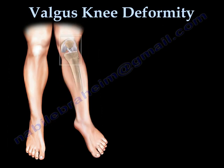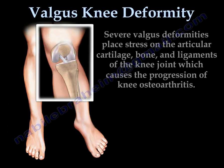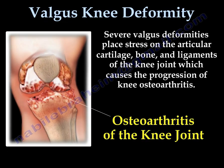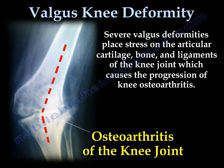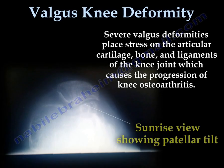Severe valgus deformity places stress on the articular cartilage, the bone, and the ligaments of the knee joint, causing progression of knee arthritis. Here is an example of X-rays showing severe valgus deformity of the knee. Sunrise views show the patellar tilt.